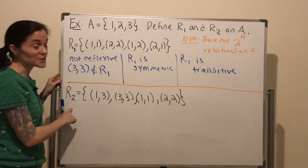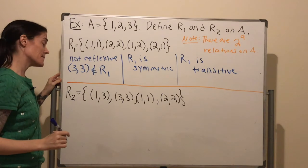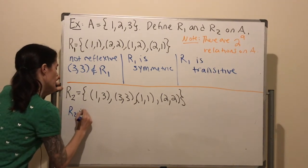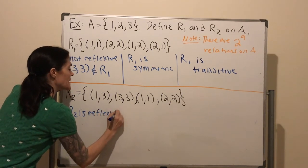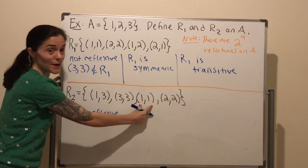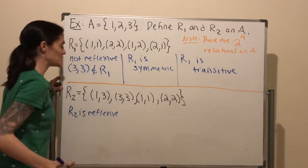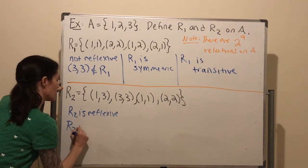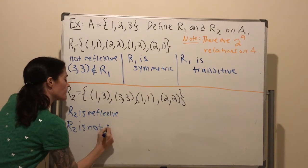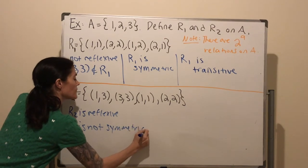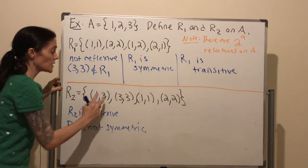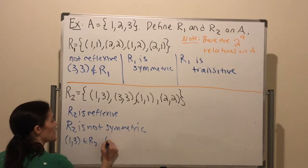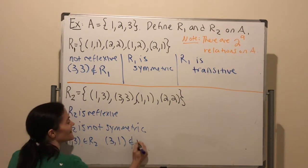Now let's look at R2 — it's on the same set A. Well, this one is reflexive. We can see this because we have ordered pairs (1,1), (3,3), and (2,2). But R2 is not symmetric. Why? Because (1, 3) is in R2, but (3, 1) is not in R2.